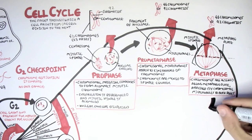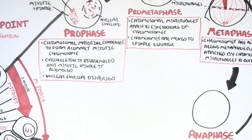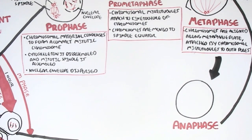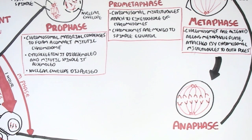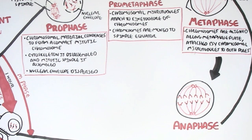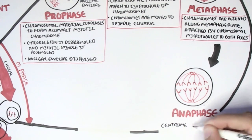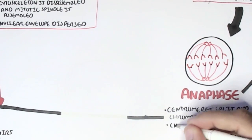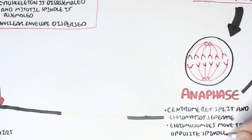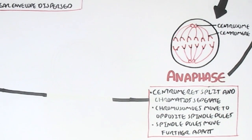The cell in metaphase will then enter anaphase. In anaphase, the centrosomes with the microtubules will pull the duplicated chromosomes apart, so one chromatid will go towards one centrosome and the other will go to the other centrosome. In anaphase, the centromeres, which hold the duplicated chromosomes together, will split and the chromatids will separate. The chromosomes will then move to opposite spindle poles, and then the spindle poles will move further apart, ready for division. So just recapping: this is the centrosome and this is the centromere, which previously held the duplicated chromosome.